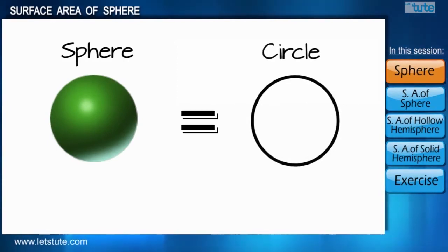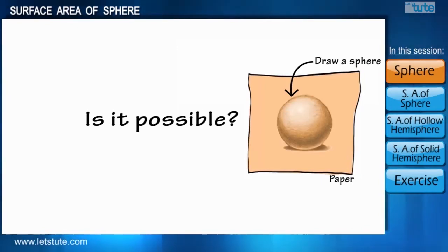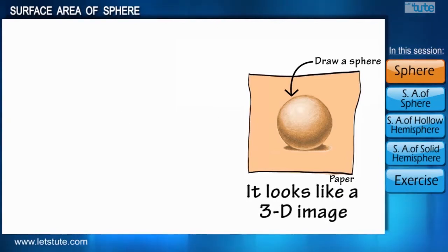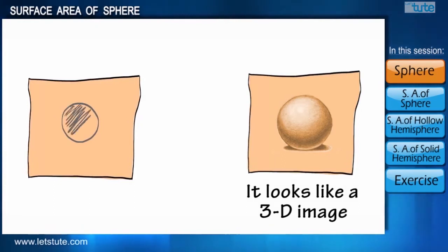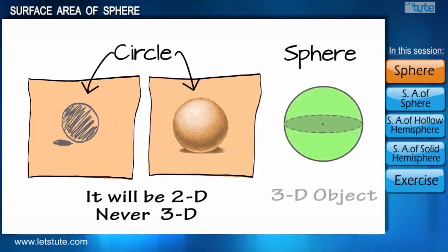Many people think that a sphere and a circle are one and the same, which is not correct. If you are given an exercise to draw a sphere on paper, is it possible to draw it? It may look like a sphere because some artists draw it in such a way as to seem like a three-dimensional image, but in fact anything drawn on paper cannot be three-dimensional, so it will be a circle only, whereas a sphere is a three-dimensional object.